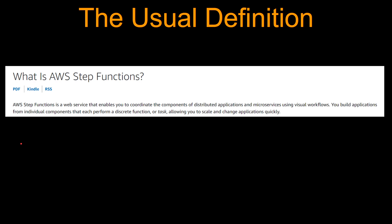So what is step function? The usual definition straight from the AWS website is: AWS Step Functions is a web service that enables you to coordinate the components of distributed applications and microservices using visual workflows. So basically, you can put together a bunch of tasks and create a workflow.